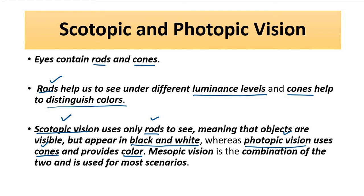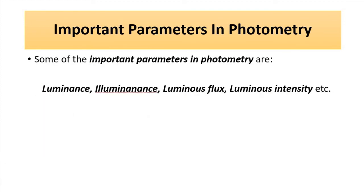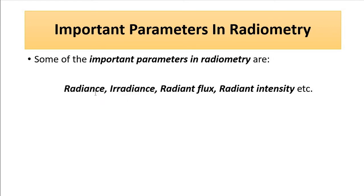When it comes to photometry and radiometry, we will be discussing some important parameters and quantities. For photometry, the important parameters are luminance, luminous flux, and luminous intensity. For radiometry, they are radiance, irradiance, radiant flux, and radiant intensity. We will be discussing each of these parameters in detail in separate videos.